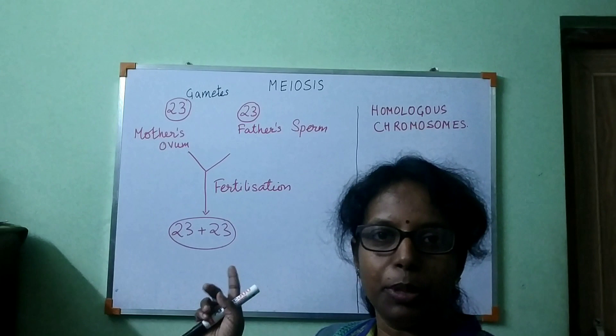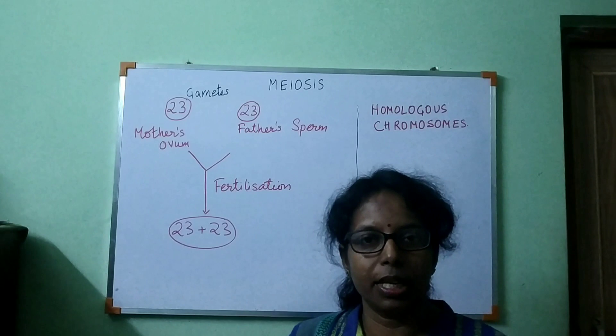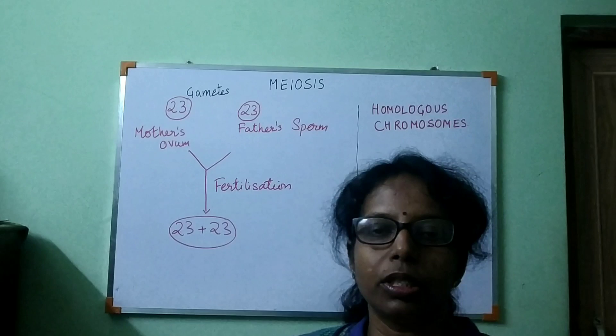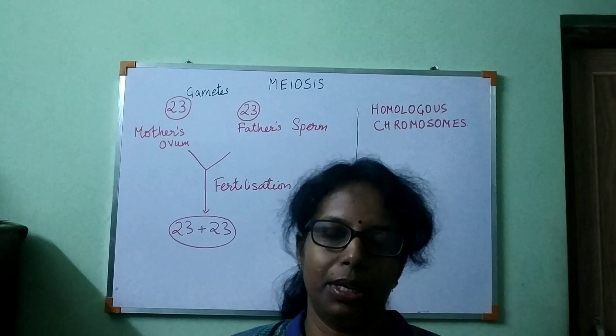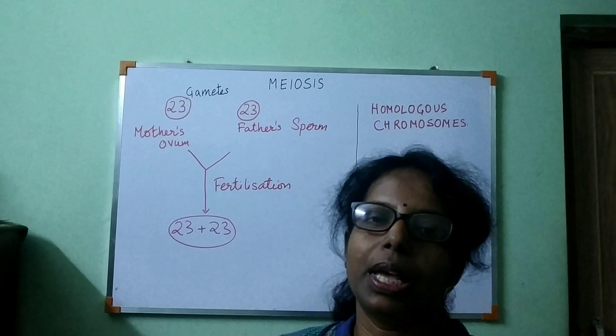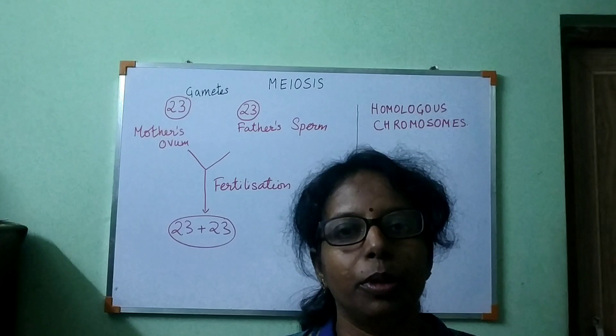Today in class we will see what is meiosis. In my previous videos you have seen how mitosis takes place, and after mitosis all the daughter cells formed have the same number of chromosomes as the parent cell. Now we are going to see another type of cell division which takes place only in reproductive cells or reproductive organs.